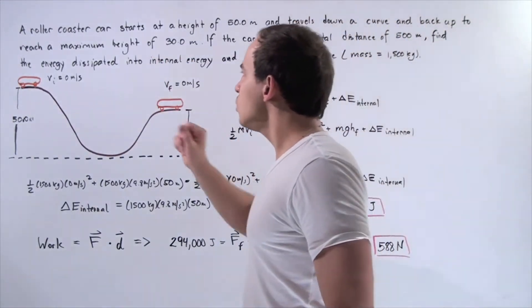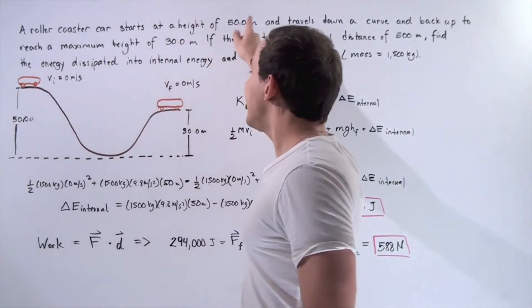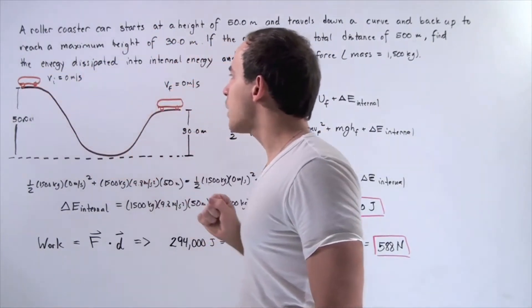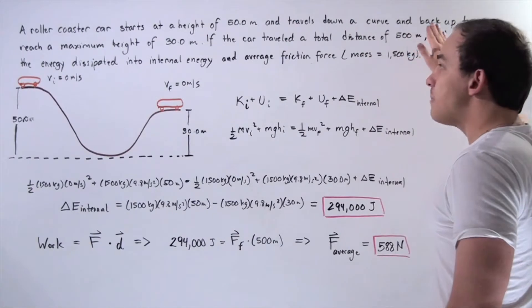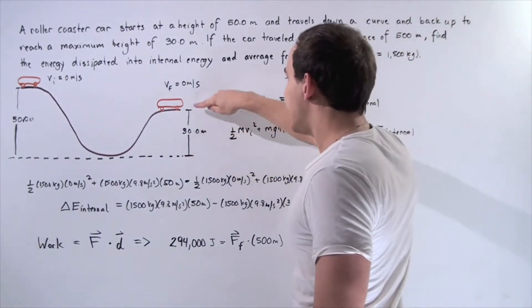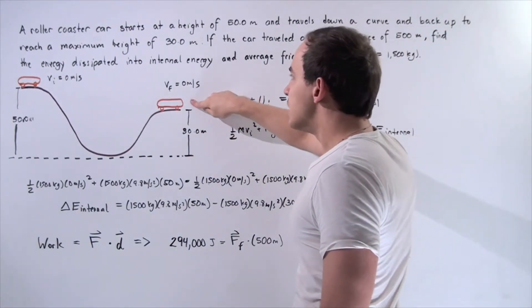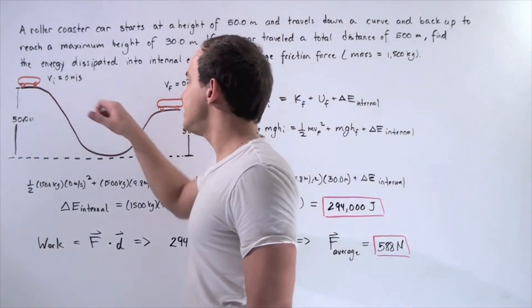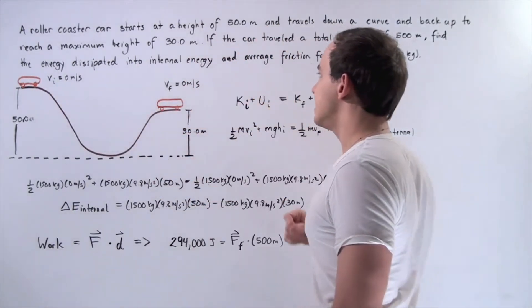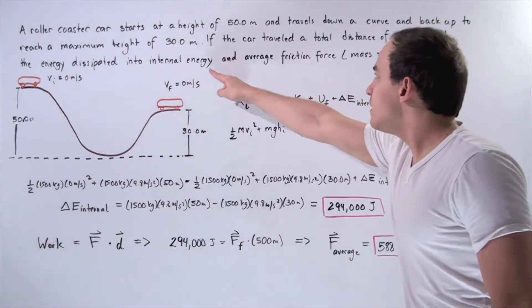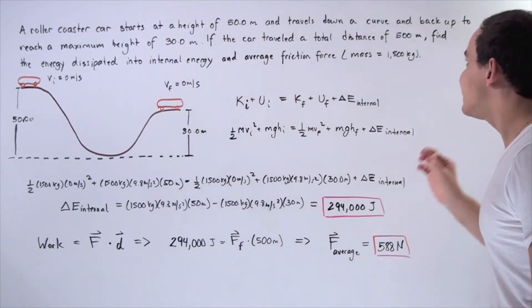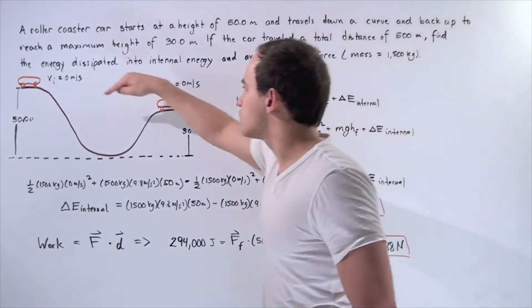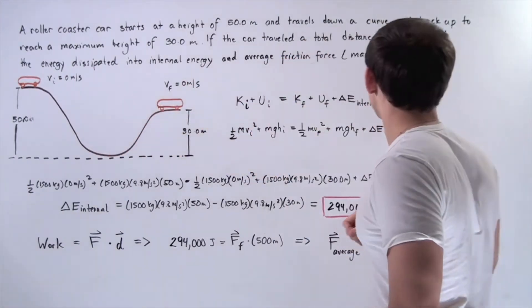Suppose a roller coaster car starts at a height of 50 meters above ground and travels down a curve and back up to a maximum height of 30 meters. The initial velocity is 0 meters and the final velocity is 0 meters. The car traveled a total distance of 500 meters.